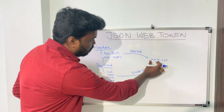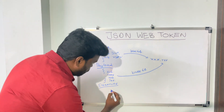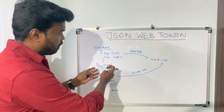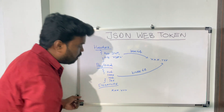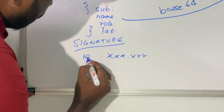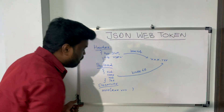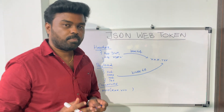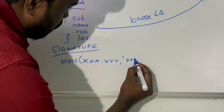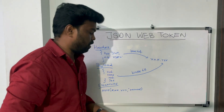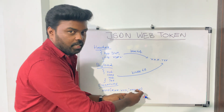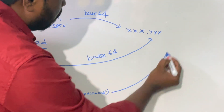To create the signature, we take the first part of the token (the base64 format of the header), put a dot, then take the second part (the base64 format of the payload), and apply the hash algorithm — HS256 — to this combined value. For this algorithm to work, you also need to pass a secret key. For example, using a secret like 'password' (though obviously never use this in production), calling the hash function on this value with the secret will create a signature, which becomes the third portion of the JWT.